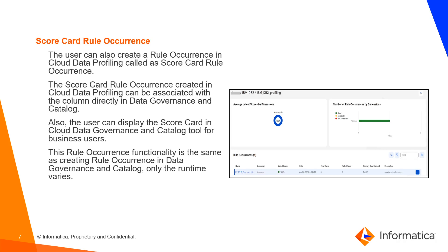Scorecard rule occurrence: the user can create a rule occurrence in Cloud Data Profiling, and that rule occurrence is called a scorecard rule occurrence. The scorecard rule occurrence created in Cloud Data Profiling can be associated with the column directly in data governance and catalog. A user can display the scorecard to business users in the data governance and catalog tool. The scorecard rule occurrence functionality is the same as data quality rule occurrence in CDGC — the only difference is the runtime varies.